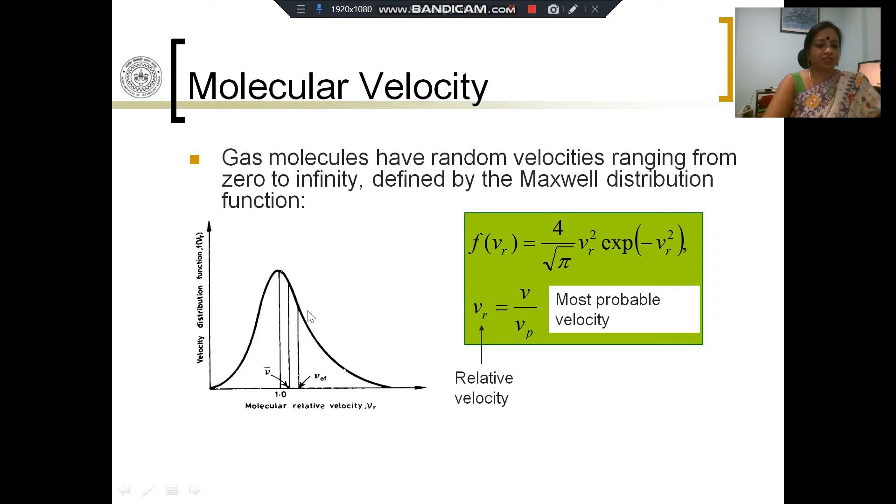Most of the particles tend to have velocities which are clustered around the peak velocity range. As we go further away from the peak velocity to very low values, the number of such particles reduces, and as we go to very high velocities which differ widely from the peak velocity, again the number of such velocities reduces.